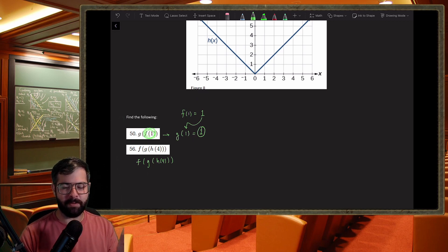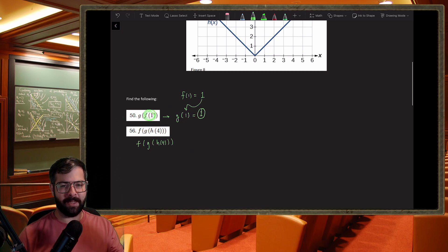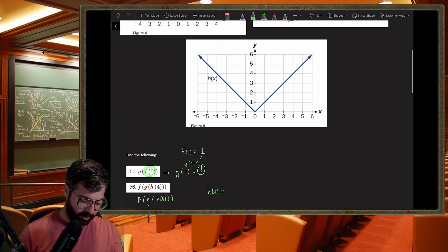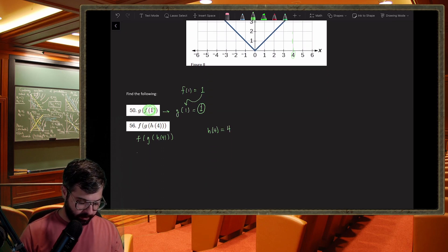So f of g of h of four - there's this chain and we need to start from the inside out. We need to feed h the input of four and see what we get. So an input of four for h gives us an output of four for y. So h of four is four. So this expression really means f of g of four.